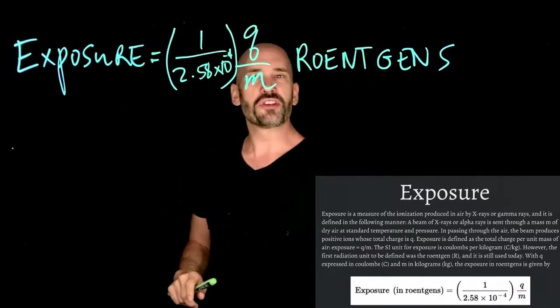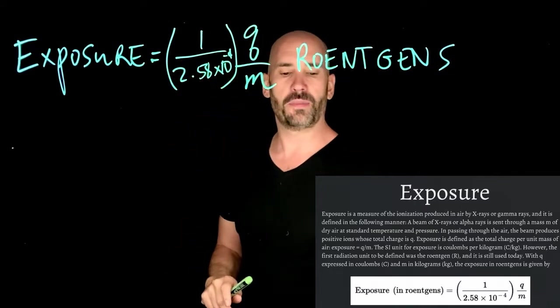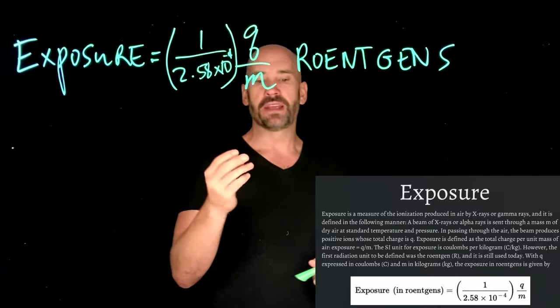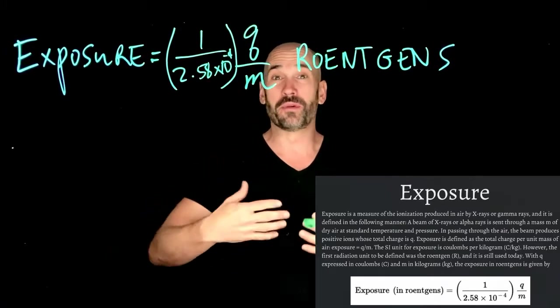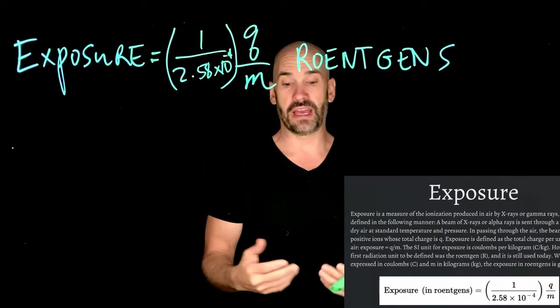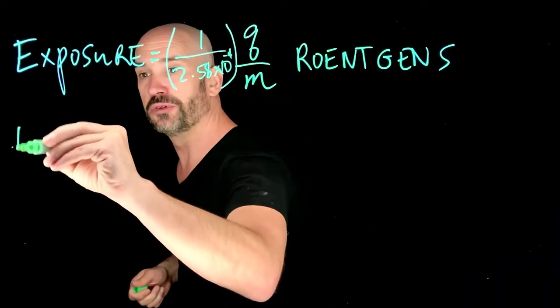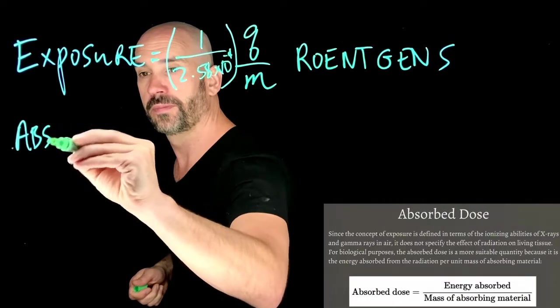But notice, we're just talking about air here. We're not talking about any kind of biological system. How can you tell how much radiation was absorbed by actual living tissue? This gets us to the second concept, which is called the absorbed dose.